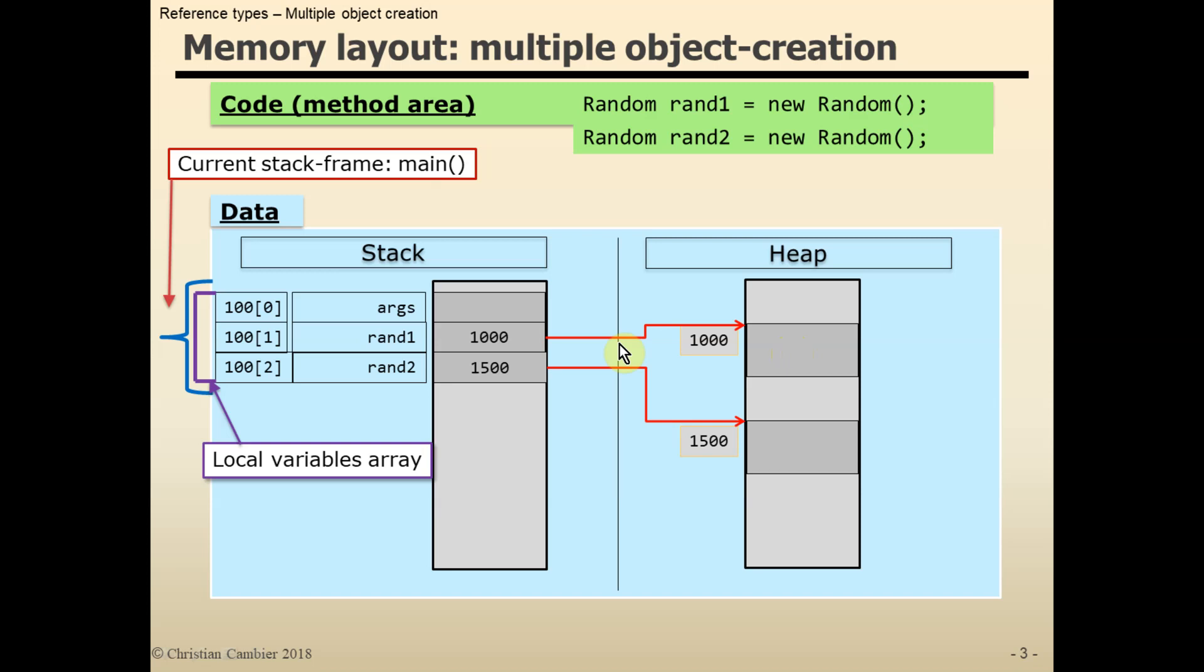Now, what happens when we assign rand1 to rand2? Actually, this is just an assignment. I mean, exactly the same happens as when we would assign one integer variable to another.